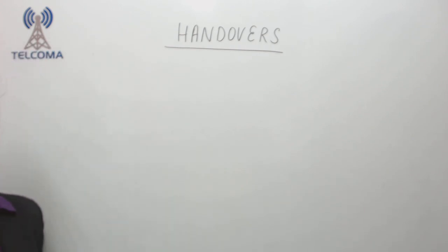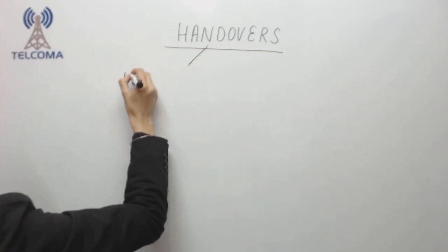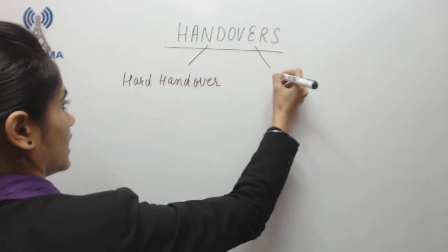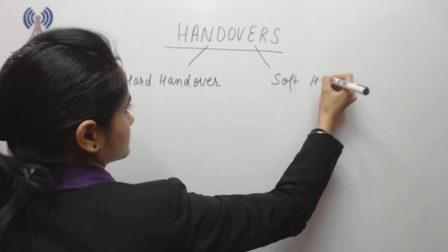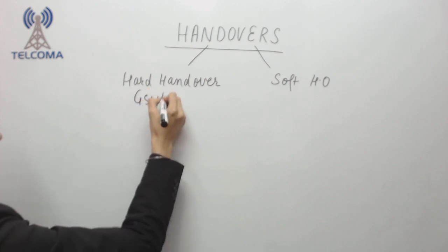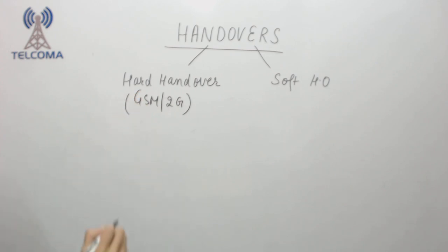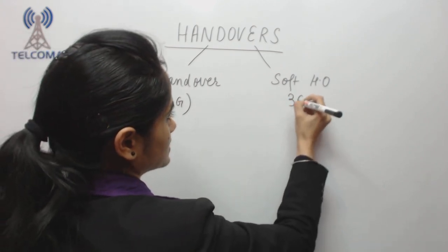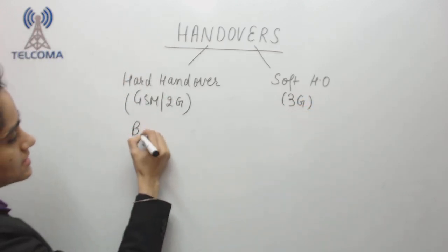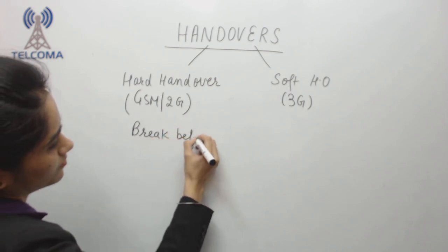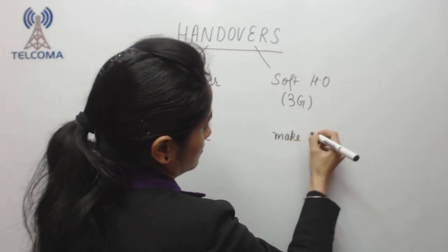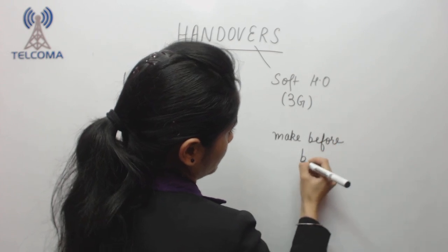Now, talking about the types of handover: handovers are of two types — hard handover and soft handover. Hard handover is used in GSM, also called 2G. Soft handover is used in 3G. Hard handover basically follows a break-before-make approach, whereas soft handover follows a make-before-break approach.